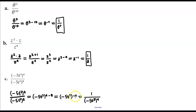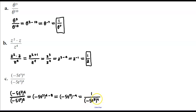We don't want to leave that exponent negative, so we're going to take the reciprocal. It's going to equal 1 over the base of negative 5t to the third power raised to the power of 4.